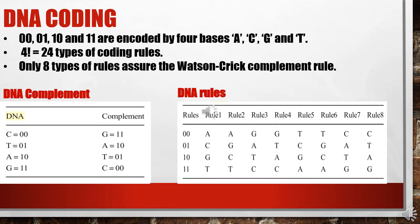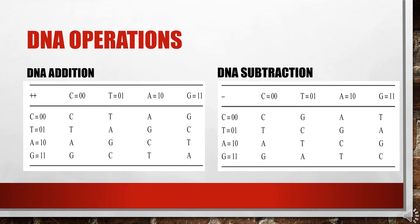We have to keep in mind that the rule used for encoding the data during the encryption process must be used for decoding the data at the decryption site. For encryption we use DNA addition using the rules given in the first table, and for decryption we apply DNA subtraction using the rules given in the second table.